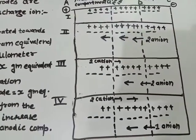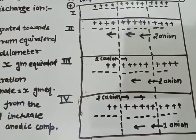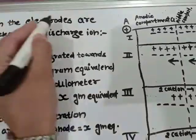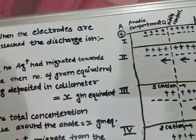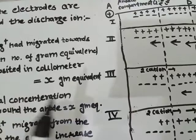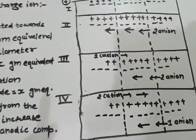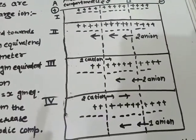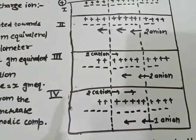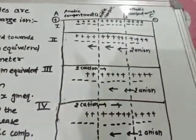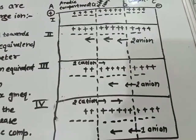The next topic is Hittorf's theoretical device when the electrodes are attacked by the discharge ion. In the previous topic we discussed Hittorf's theoretical device when the electrodes are not attackable by the discharge ions. In last topics we illustrated Hittorf's rule.